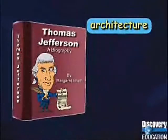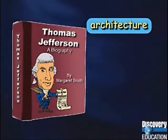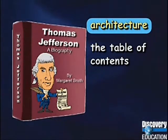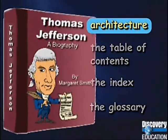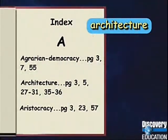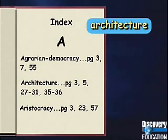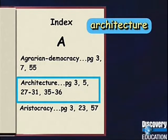In what section would you expect to find a listing of all the pages where architecture is mentioned — the table of contents, the index, or the glossary? You would find the pages where the word architecture is used in the index. The index is located at the end of a book. It's a list of words along with the page numbers on which those words can be found. By looking in this index, we can see that the word architecture is also used on pages other than the architecture chapter.